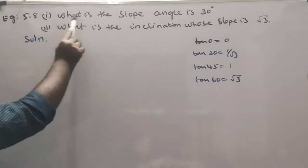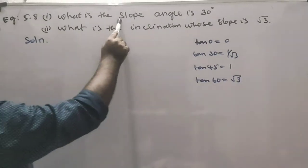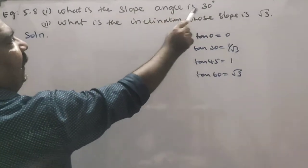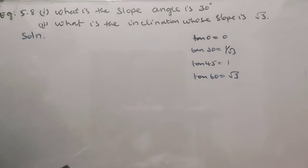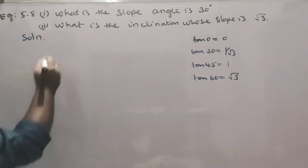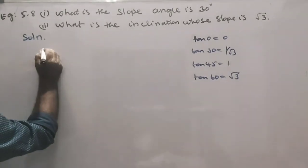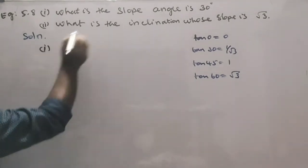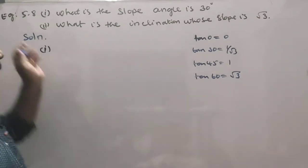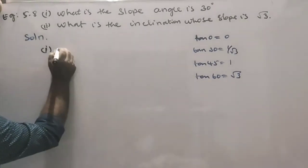What is the slope? The angle of inclination is 30 degrees.